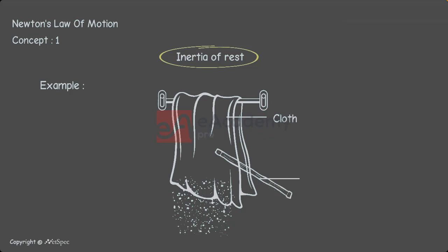This is because the beating results in motion of the cloth, but the dust particles remain at rest. Thus, the dust particles fall off. This is an example of inertia of rest.